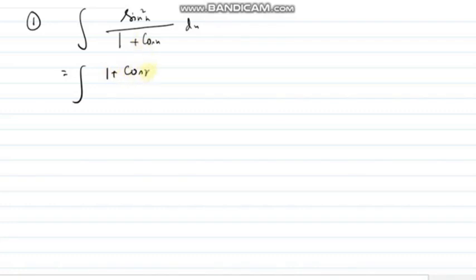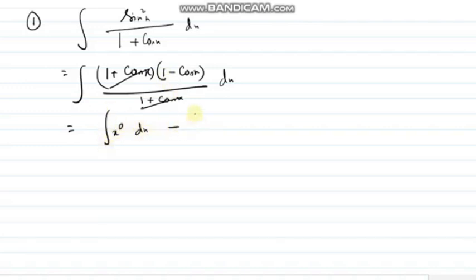Sin square x, what I can write? 1 minus cos square x, and 1 minus cos square x using a square minus b square formula, a plus b into a minus b, right? Integration of 1. Integration of 1, can I imagine as integration of x to the power 0.